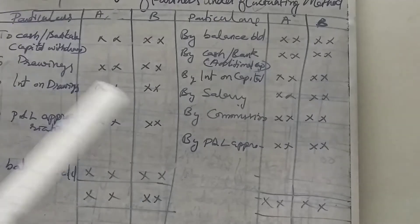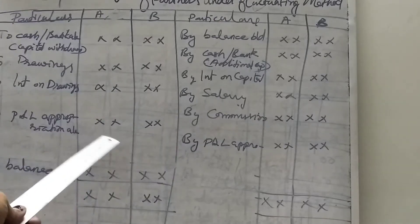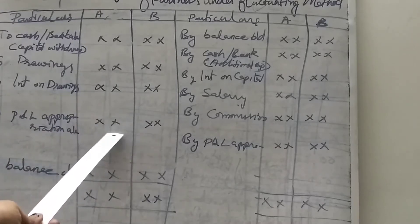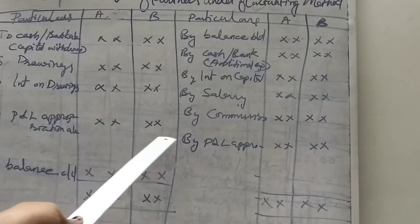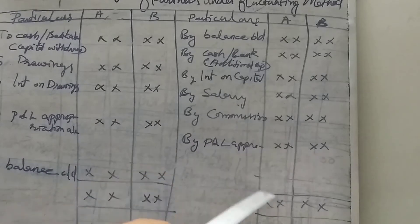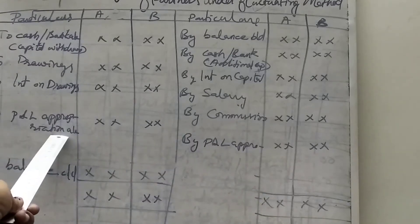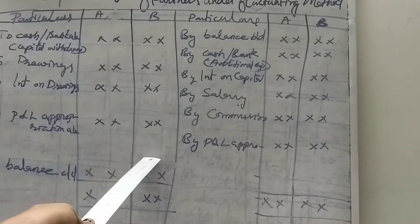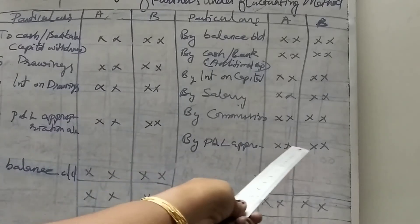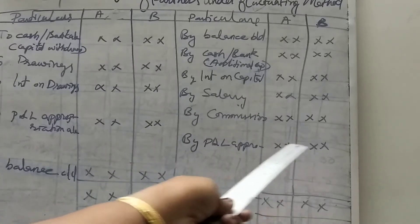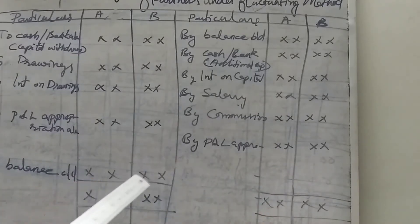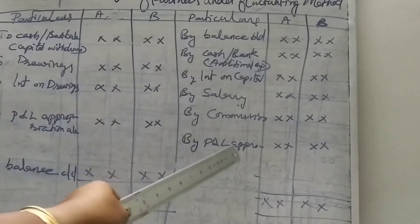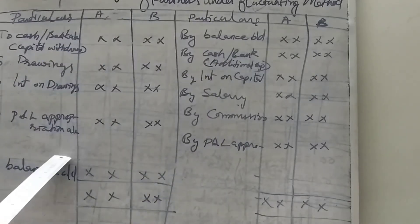That's why we put the balance here. You will get profit and the transfer balance — maybe debit balance or credit balance. This side is extra: profit and loss appropriation account transfer. If you don't want credit side, I will transfer to profit and loss appropriation account.